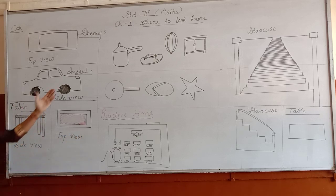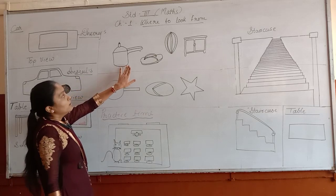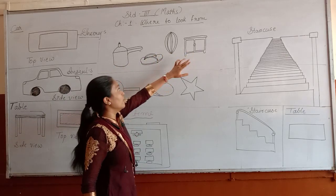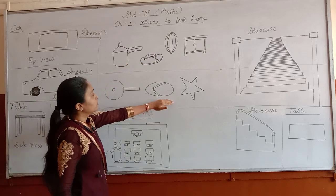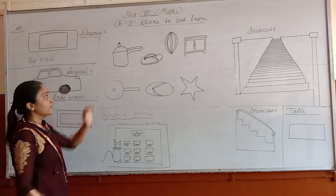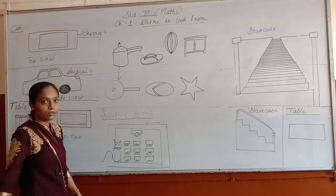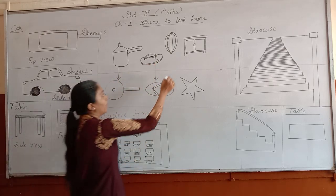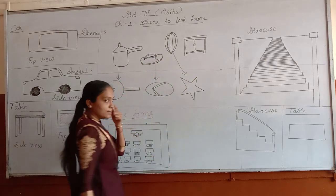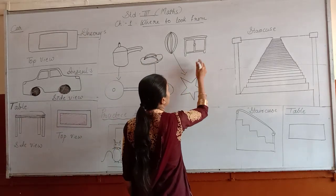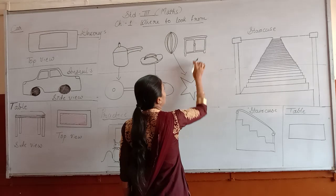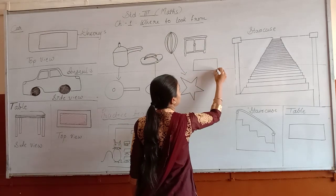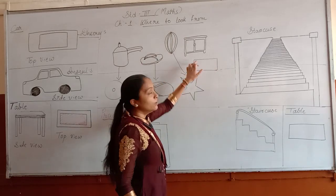Now a few more examples. You can see here: a pressure cooker, a sleeper, and a bookshelf. These are the top views of these things. This is the top view of a pressure cooker. This one is the top view of a sleeper. And if you draw the top view of this bookshelf, you will get this picture — this is the top view of a bookshelf.